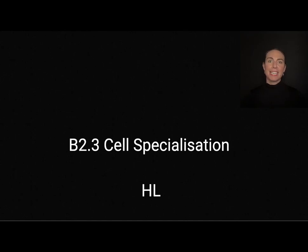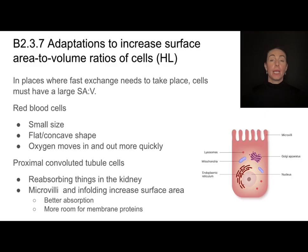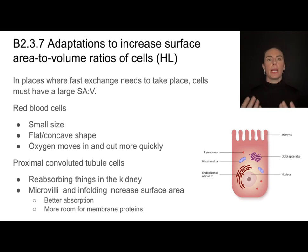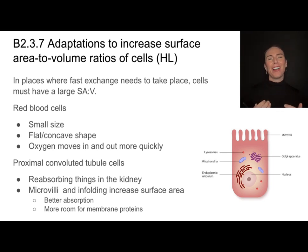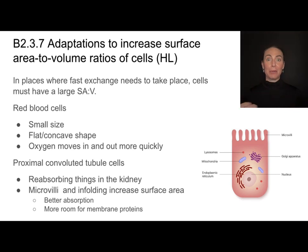This video covers the higher level content from B2.3 on cell specialization. We know that surface area to volume ratio affects how quickly cells can get materials into and out of their cells. In tissues where there needs to be a rapid exchange of materials, cells must have a large surface area to volume ratio, and so cells have unique shapes and adaptations in places where this is really important.